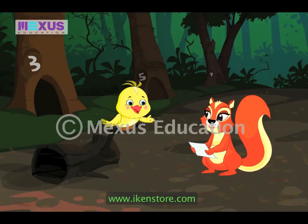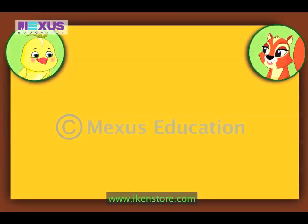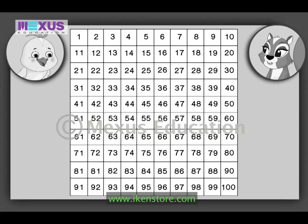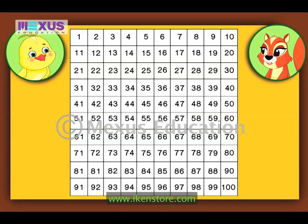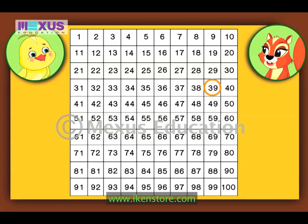Now I will test if you have understood odd and even numbers. This is a number chart showing numbers from 1 to 100. It will help you find the odd and even numbers. So Amber, which are the odd numbers from 30 to 40? Odd numbers end in 1, 3, 5, 7, or 9. So the odd numbers are 31, 33, 35, 37, and 39.